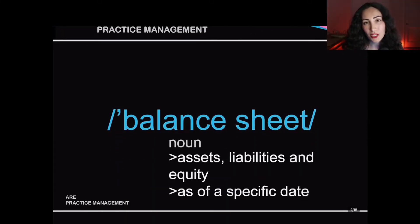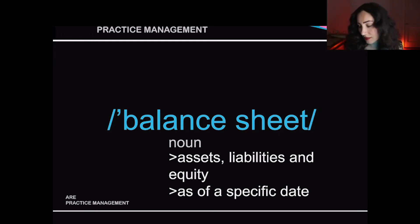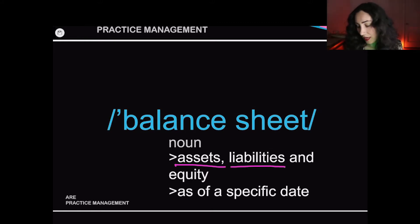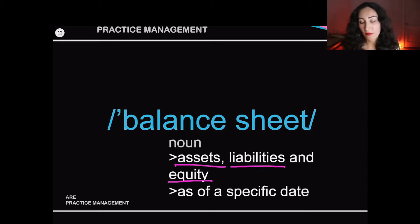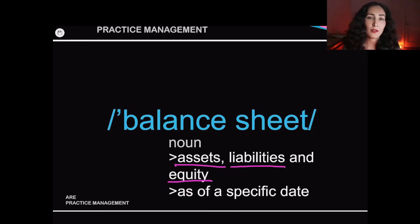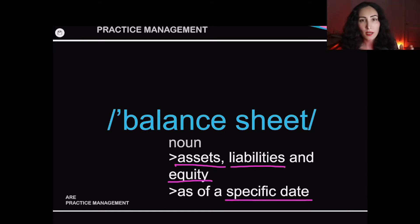Let's begin with a definition of the balance sheet. The balance sheet is a financial statement that includes three primary sections. The first are your assets, or what the business owns. Liabilities, what the business owes. And equity, what the business owners have invested into the firm to establish the firm itself — it's essentially money that the business owes back to the shareholders or owners who've invested that money.